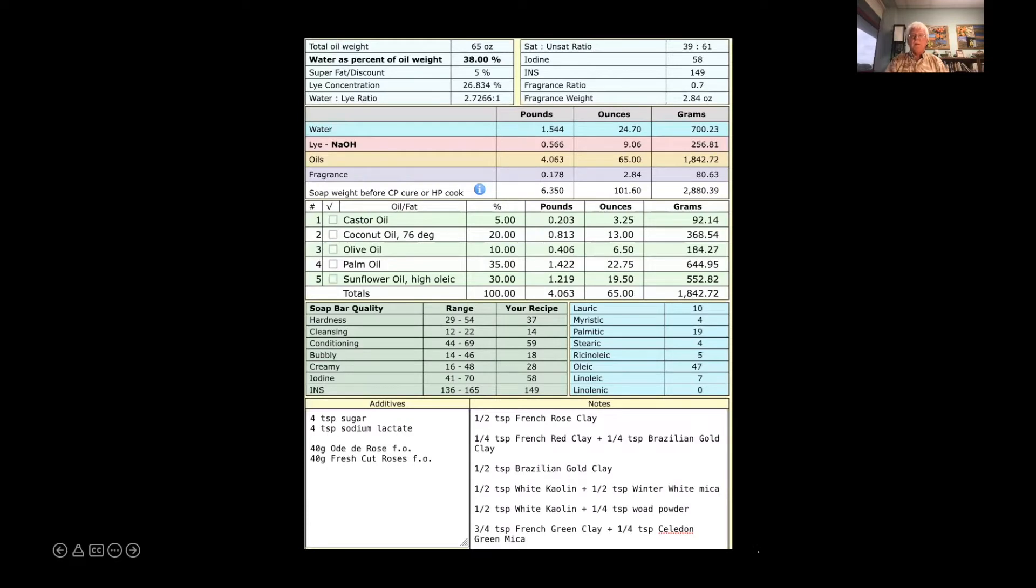This is the recipe that I'm going to be using. It should be reasonably slow. It is vegan using some castor oil for sudsiness, coconut oil for cleansing and hardness, olive and high oleic sunflower oils to make this more conditioning and also slower to harden, and then palm oil, it is RSPO sustainable palm oil, again just for some hardness, so that should make a nice recipe.